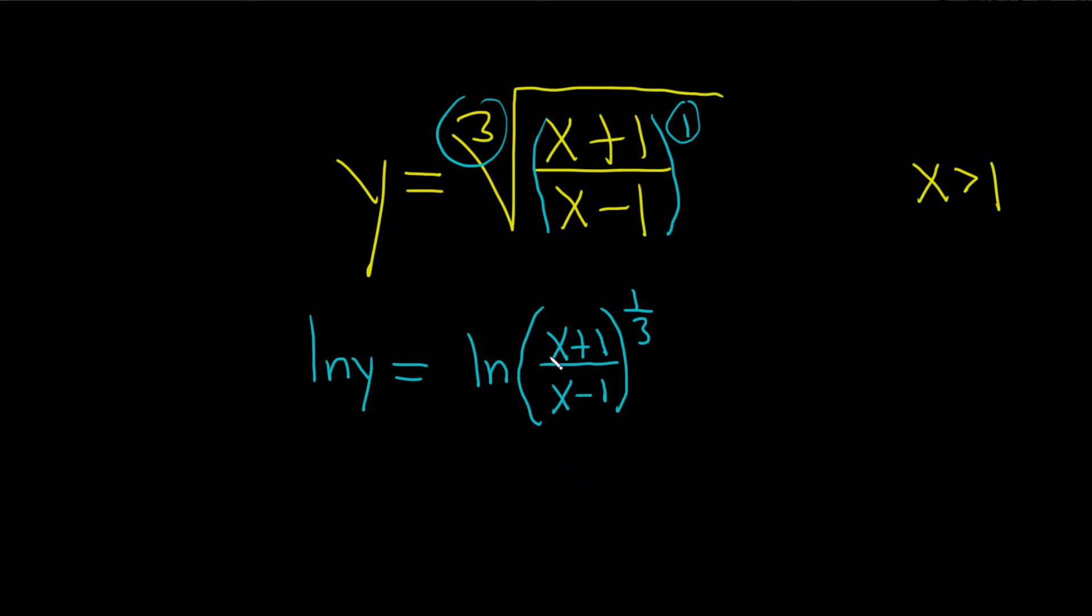All right, now we can use properties of logs to rewrite this. This side stays the same. And over here, we can take this 1 third and put it in the front. So this is 1 third natural log of all of this stuff. So x plus 1 over x minus 1, just like that.